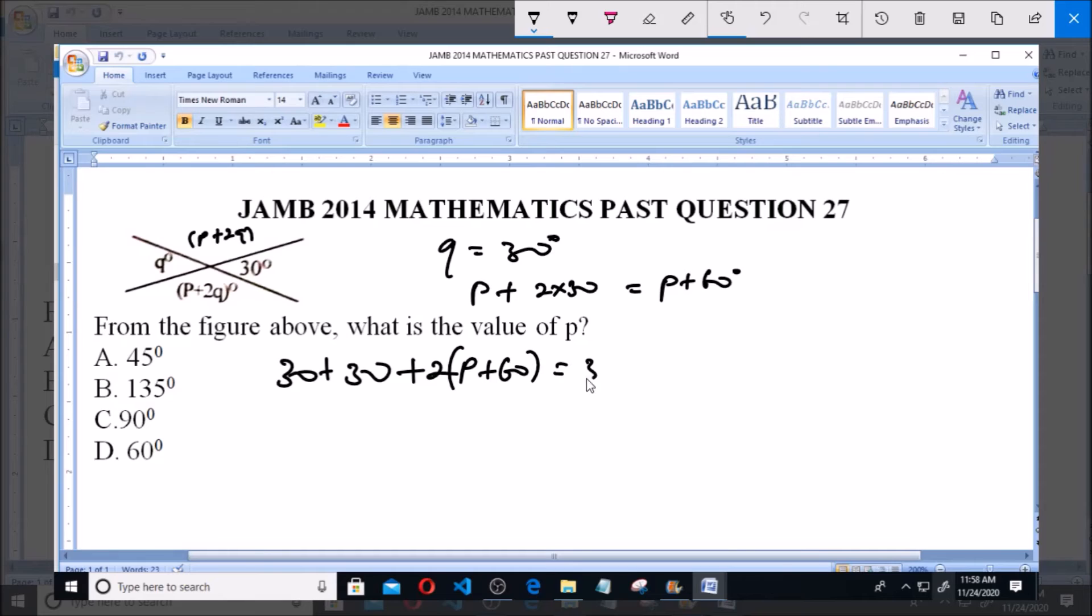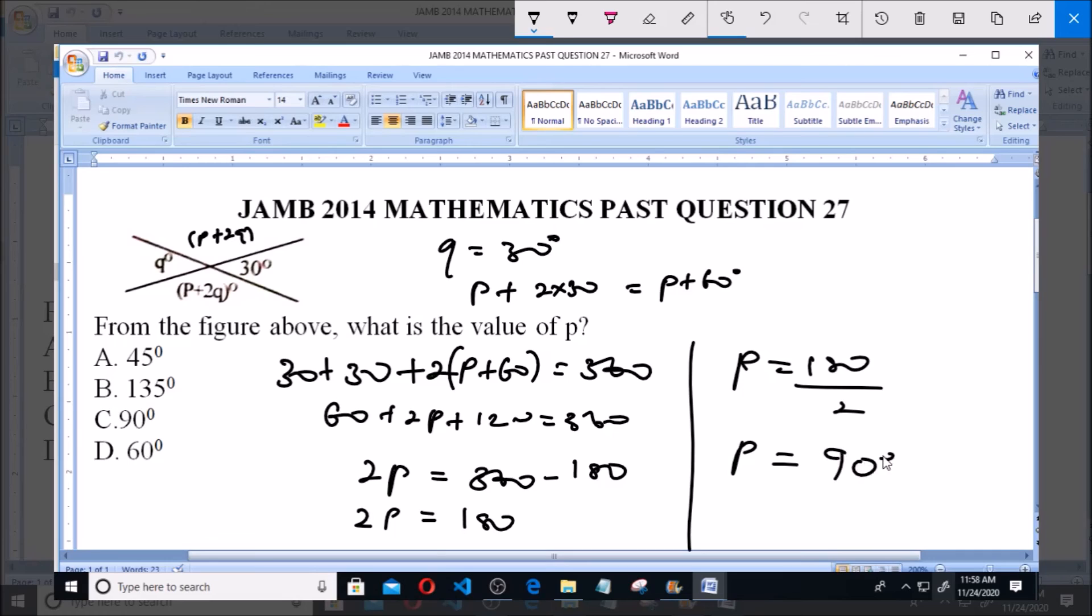So we have 60 plus 2p plus 120 is equal to 360°. So 2p is equal to 360 minus 180, that's 60 plus 120 gives us 180, then taking it here becomes minus. So we have 2p is equal to 180. Now we can say p is equal to 180 over 2, p is equal to 90°.